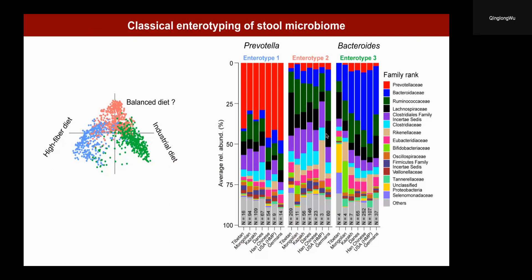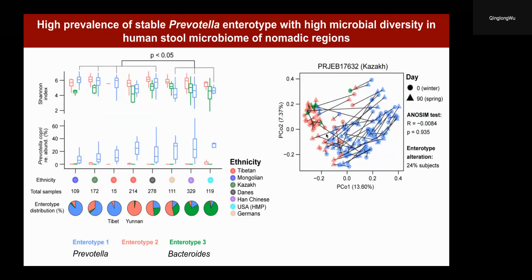The Bacteroides enterotype has been commonly linked with an industrial diet, while the Prevotella enterotype has been associated with a high fiber diet. Further analysis indicated that Central Asian nomadic populations, including Tibetan, Mongolian, and Kazakh people, have a high prevalence of the Prevotella enterotype, which shows higher microbial diversity compared to low altitude people with the Prevotella enterotype. This is the first time we reported higher microbial diversity in the Prevotella enterotype among different populations.